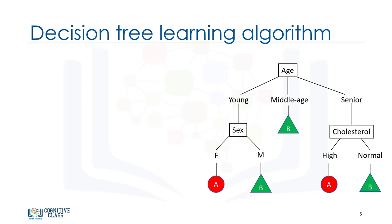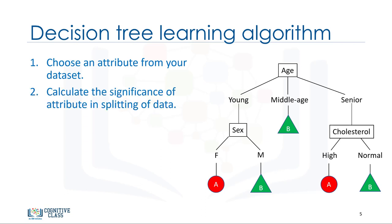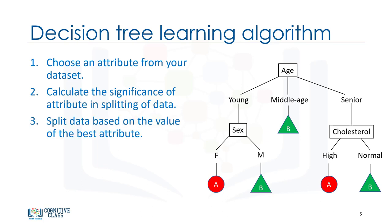Here is the way that a decision tree is built. A decision tree can be constructed by considering the attributes one by one. First, choose an attribute from our data set. Calculate the significance of the attribute in the splitting of the data. In the next video, we will explain how to calculate the significance of an attribute to see if it's an effective attribute or not. Next, split the data based on the value of the best attribute. Then, go to each branch and repeat it for the rest of the attributes.